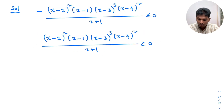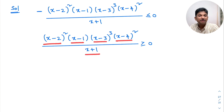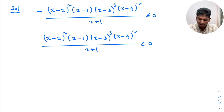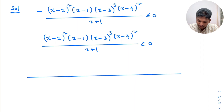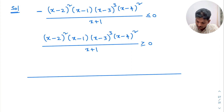Now all linear factors are in the form x minus a, so I can use the wavy curve method. I equate each factor to 0: (x-2) = 0 gives x = 2; (x-1) = 0 gives x = 1. Mark these on the number line in order.